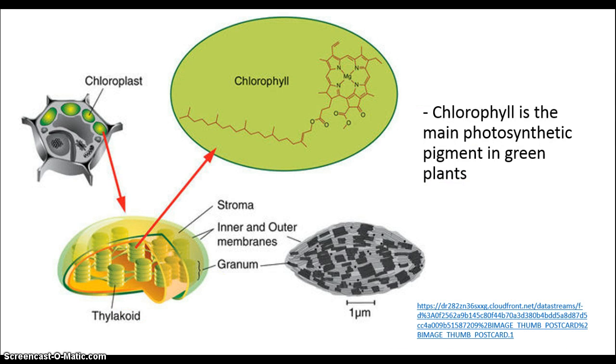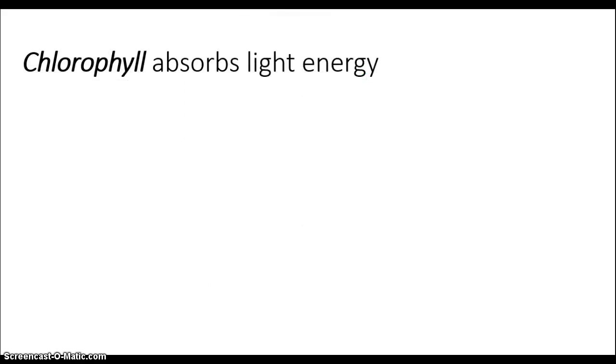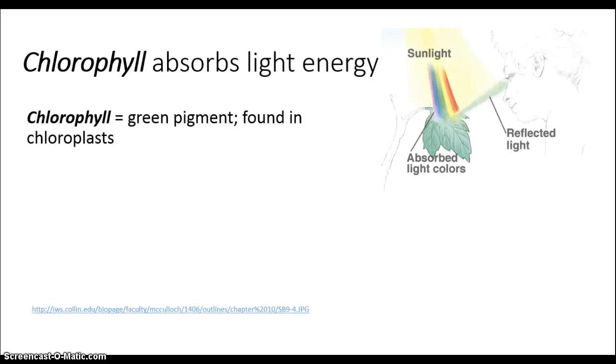This process is carried out in the chloroplast, an organelle found in a plant cell. It has a number of folded structures called thylakoids where the chlorophyll is located. Chlorophyll is the main photosynthetic pigment found in green plants. The job of chlorophyll is to absorb light energy. It's very good at absorbing most colors found in light but very bad at absorbing green, so this green is reflected and can be seen as the color of green leaves.